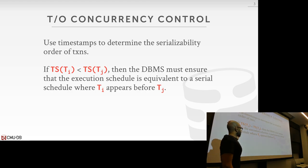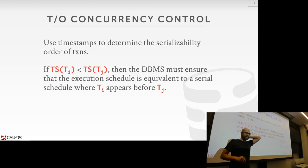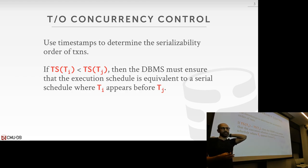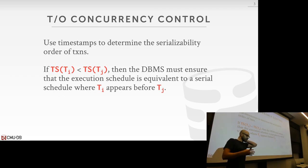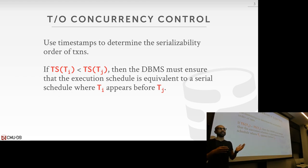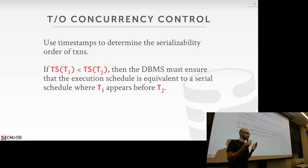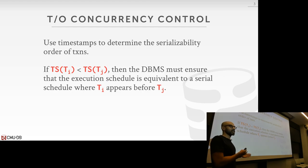The basic idea for timestamp-based protocols is a mechanism the database uses to assign numeric timestamps that pre-define the commit order of transactions. There's a function TS that, given a transaction, returns its timestamp. The database guarantees that if transaction Ti has a timestamp less than Tj, then in the serial schedule, Ti is treated as if it occurred before Tj.